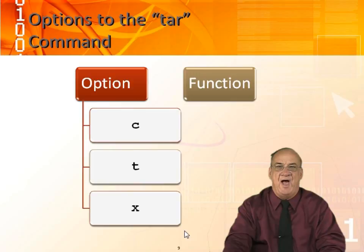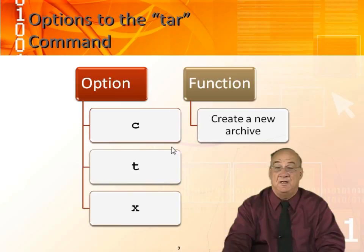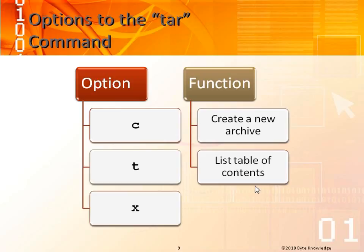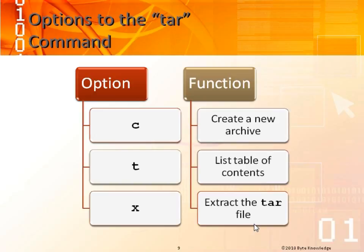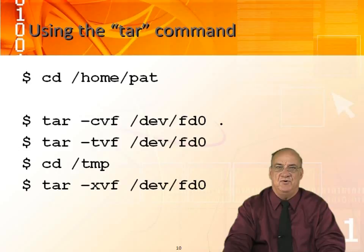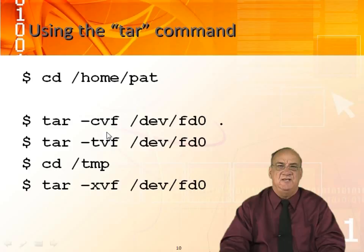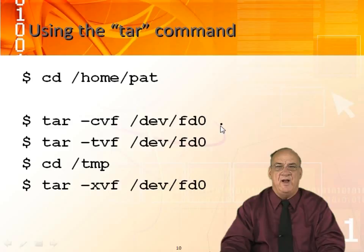The most popular TAR options are C, T, and X. C creates an archive — think of C as create. T is table of contents, or show me what's on that TAR file. X is used to extract the TAR file, or recover. An unwritten rule in Unix syntax is that if the option refers to a file, the option and file must be next to each other. TAR is very old and antiquated.